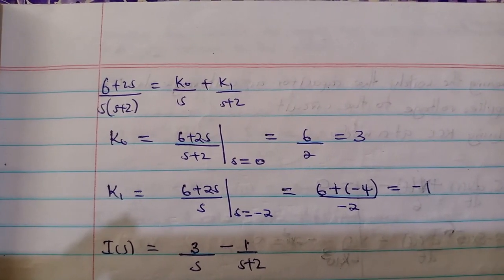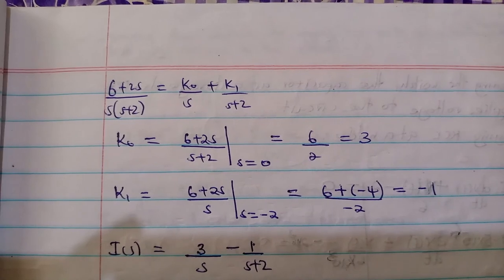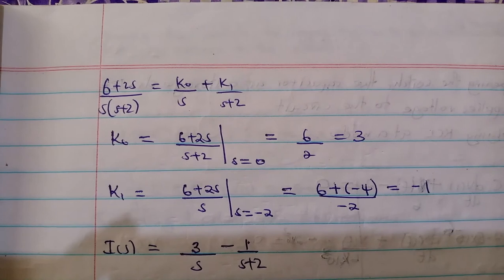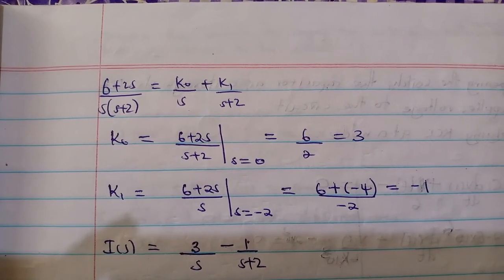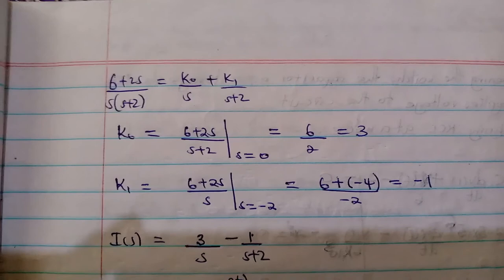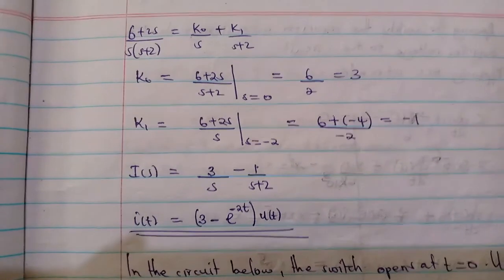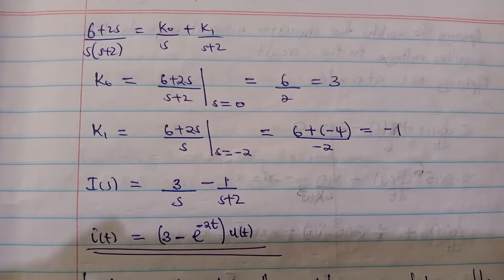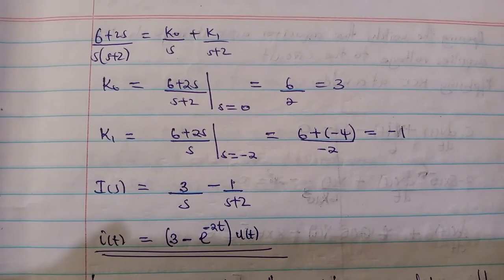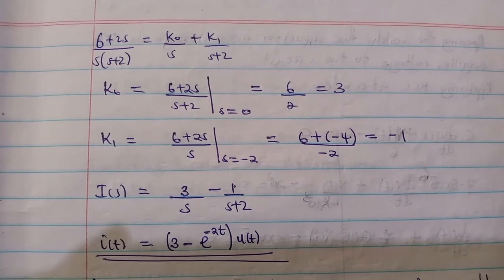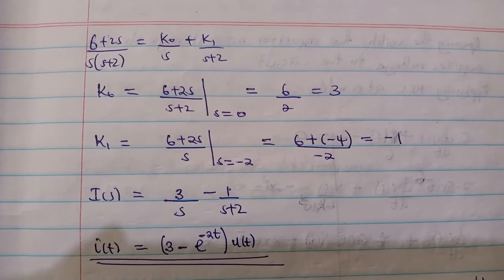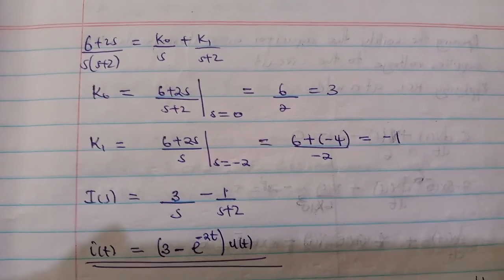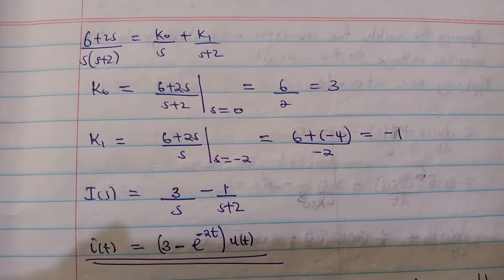Substituting s equals negative two into the left-hand side, we get (6 minus 4) / (negative 2), which gives us negative one, so k₁ equals negative one. After obtaining the partial fraction values, we replace them back into the original equation. The final step is transforming the equation from the s-domain back into the time domain using the inverse Laplace transform.